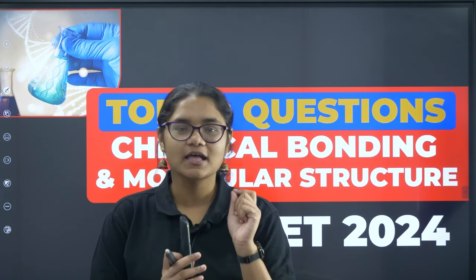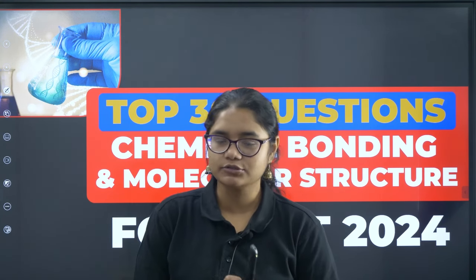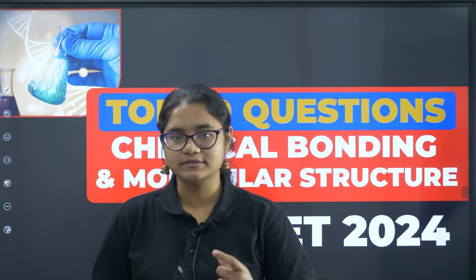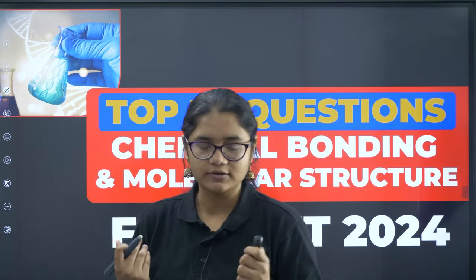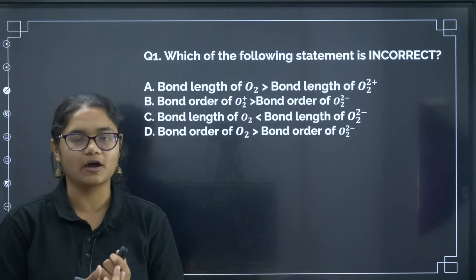Hello students, welcome back to our channel Diksha Karnataka. We have started a series discussing the top 30 questions from all chapters. In today's video I will be discussing top 30 questions from the chapter chemical bonding and molecular structure. This is a low weightage topic for KCET 2024 — you can expect one question from this chapter, but there are some important concepts that will help you solve these questions. I will also share some important tricks on how to solve them.